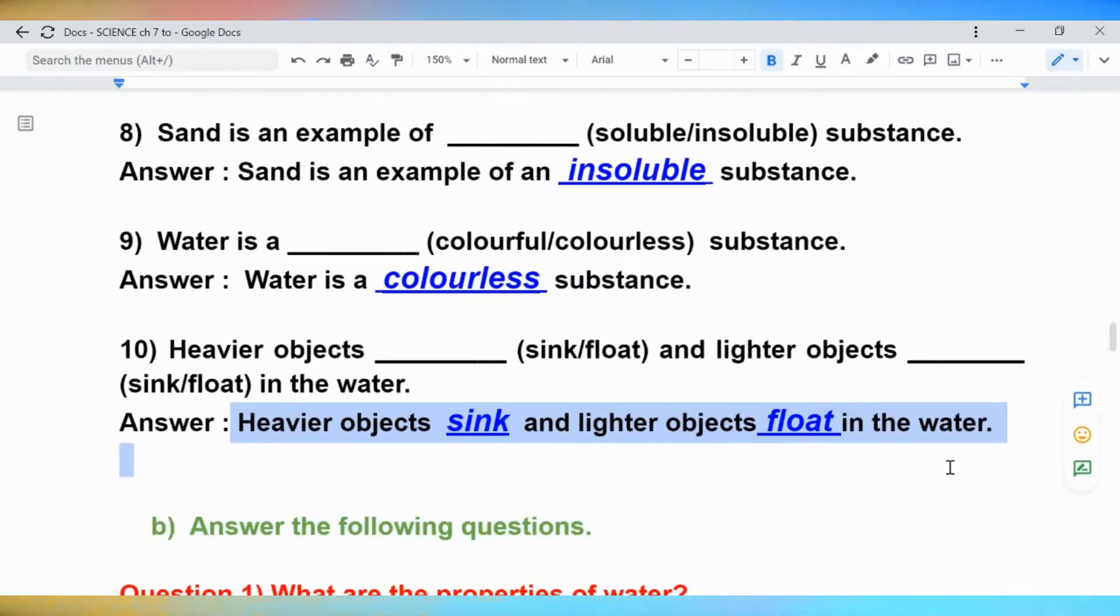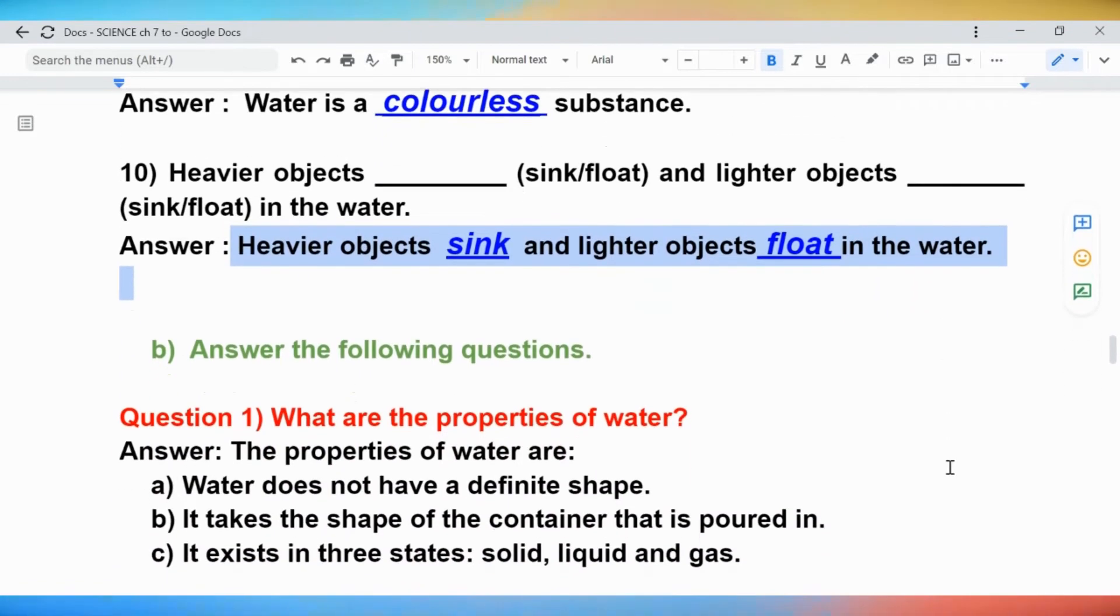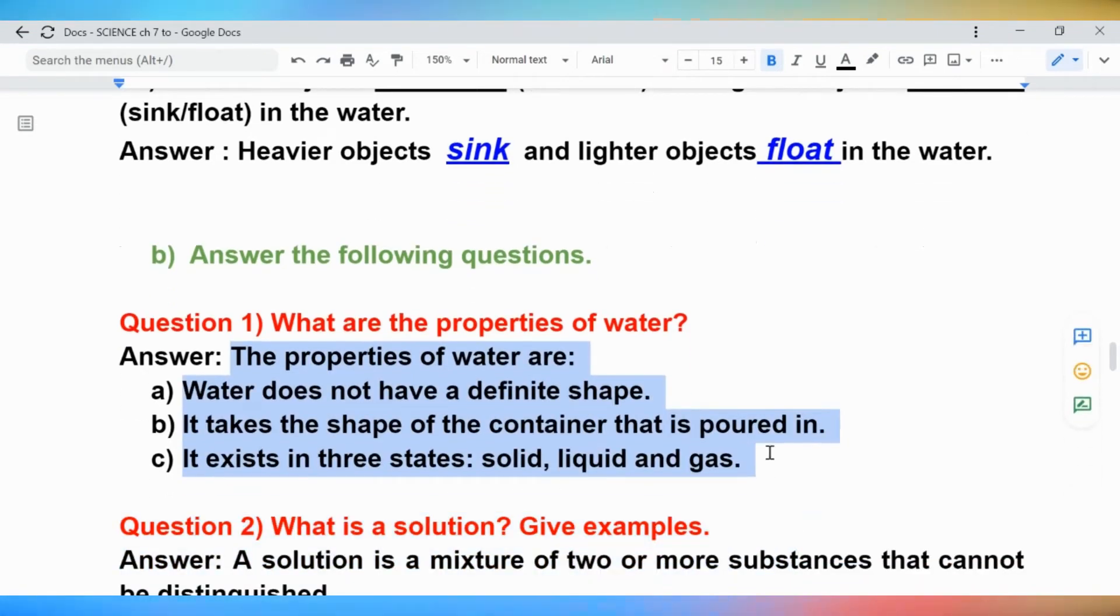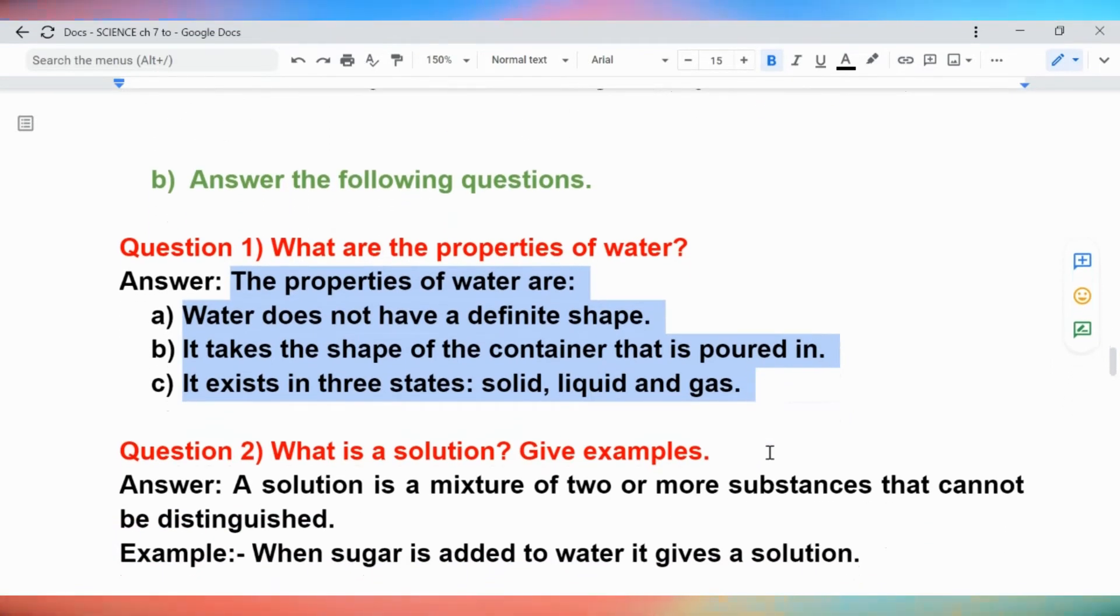B. Answer the following questions. Question 1: What are the properties of water? Answer: The properties of water are: water does not have a definite shape. It takes the shape of the container that is poured in. It exists in three states: solid, liquid and gas.